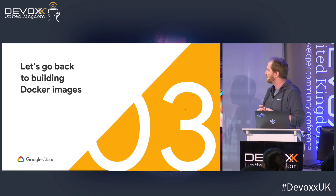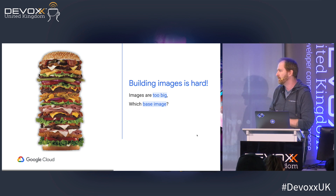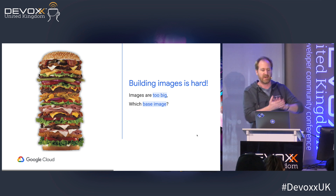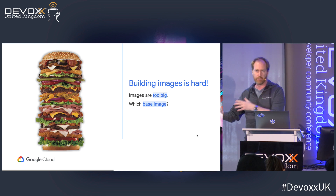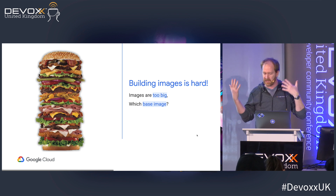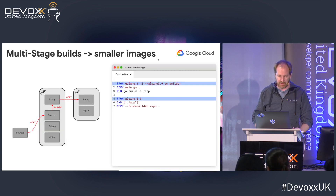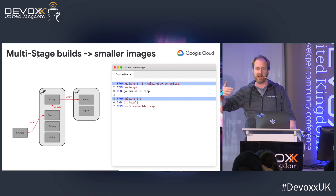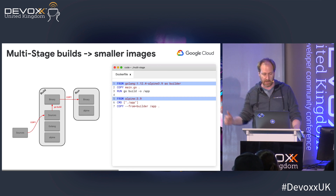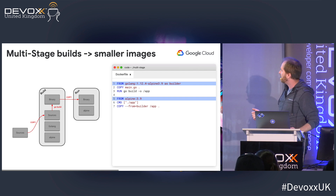Let's go back to building Docker images. I showed you Jib to build images quicker, but building Docker images is still very hard. You end up with images that are not secure, have a lot of layers, are too big to push or pull from your Kubernetes nodes. You have to ask yourself which base image to use. One tool you can use — not a Google open source tool — is multi-stage build. Who knows multi-stage build in Docker? Most people use Docker and even write Dockerfiles but don't know multi-stage builds — I really want to show you that.